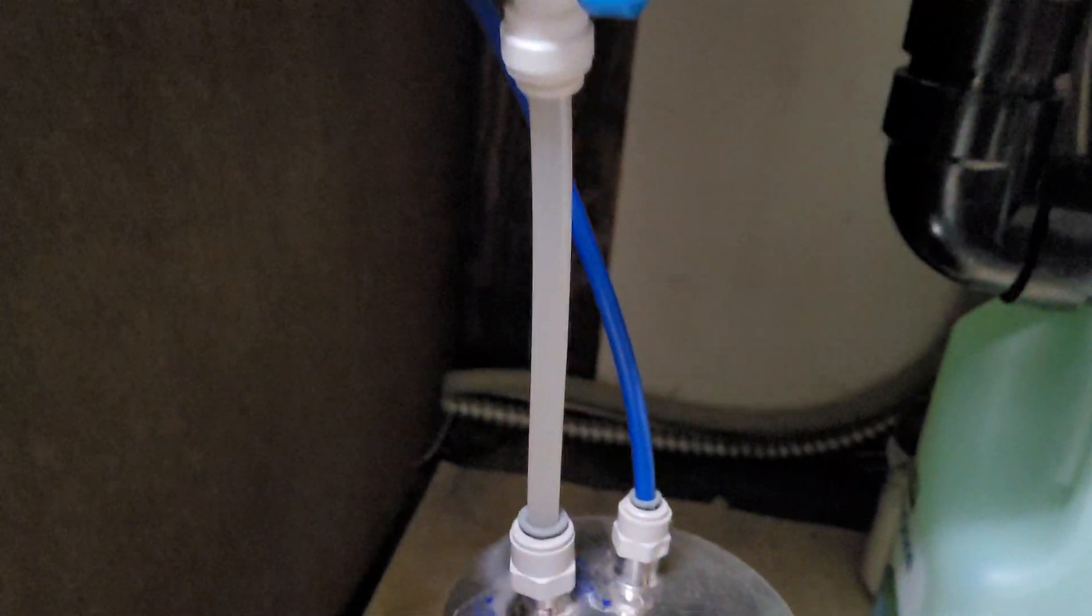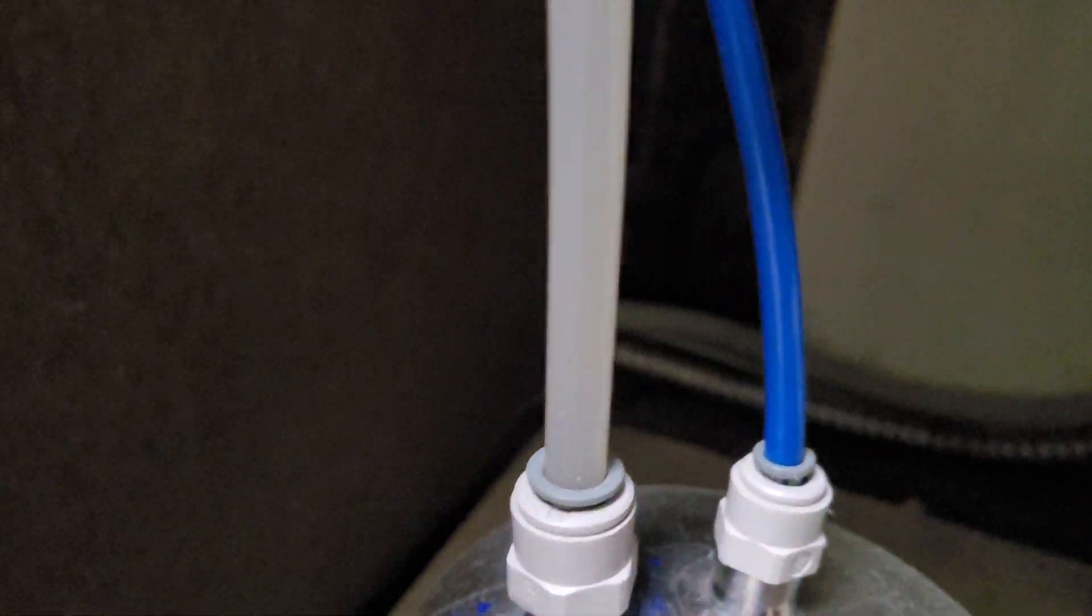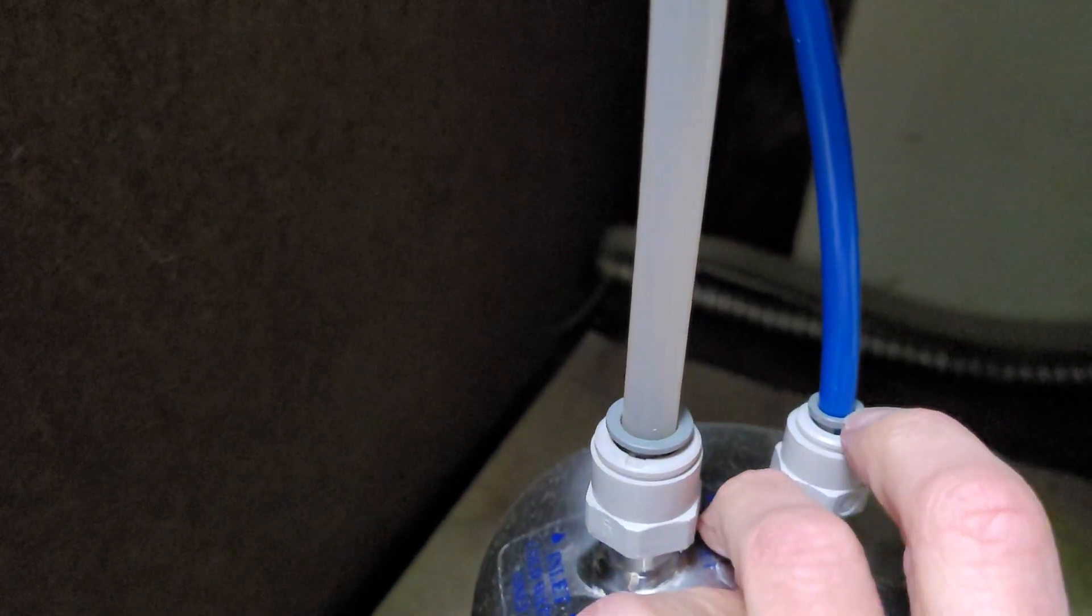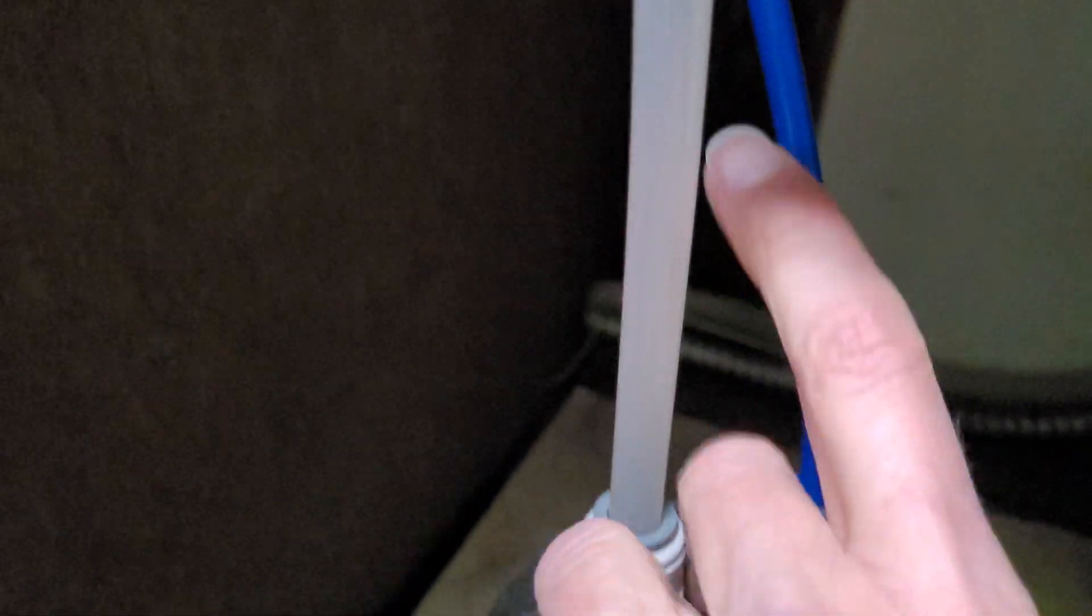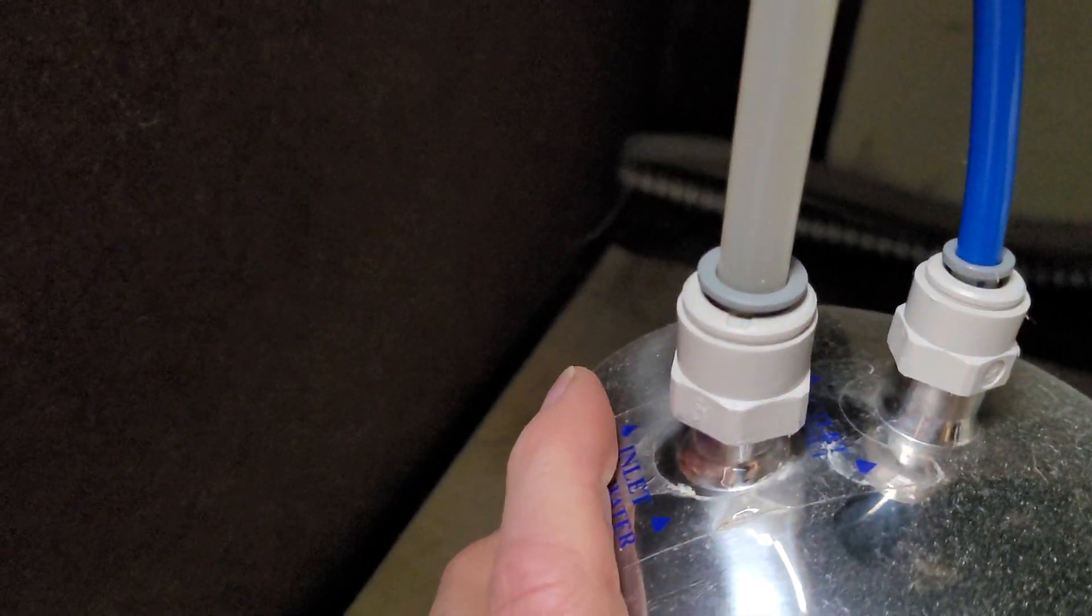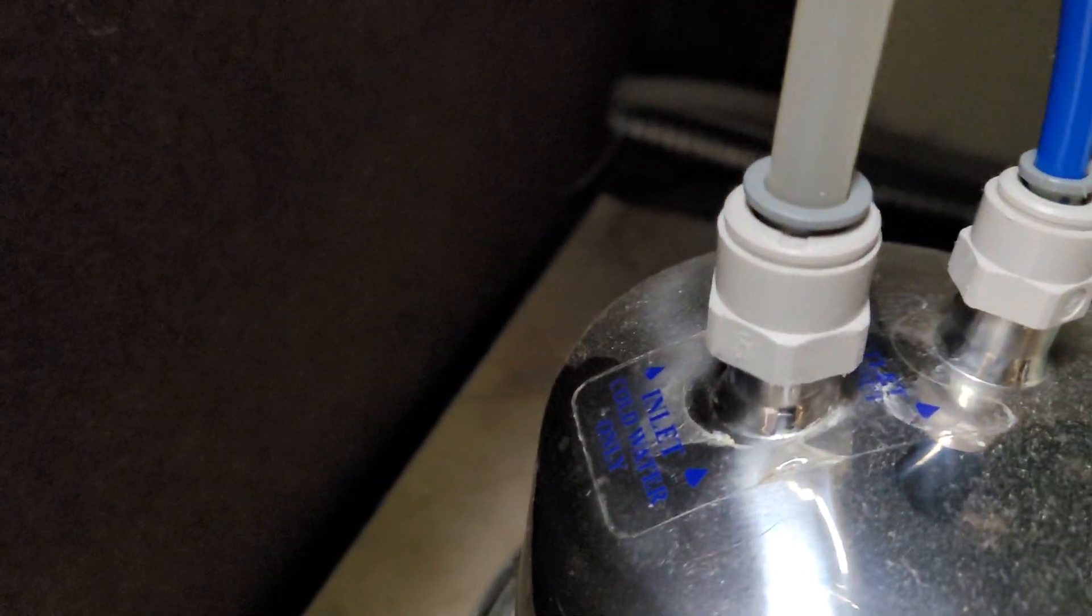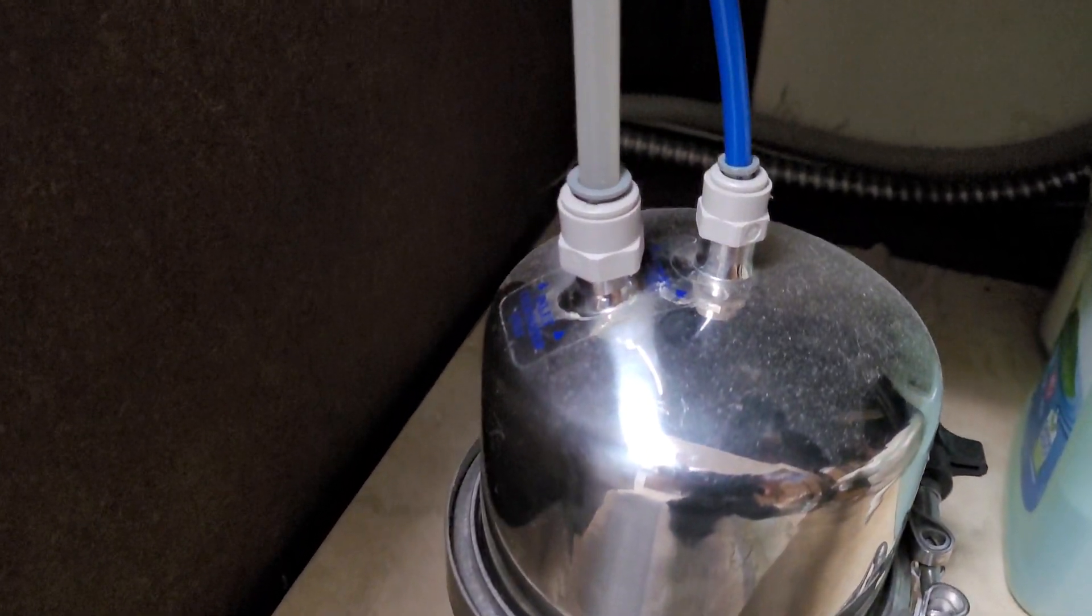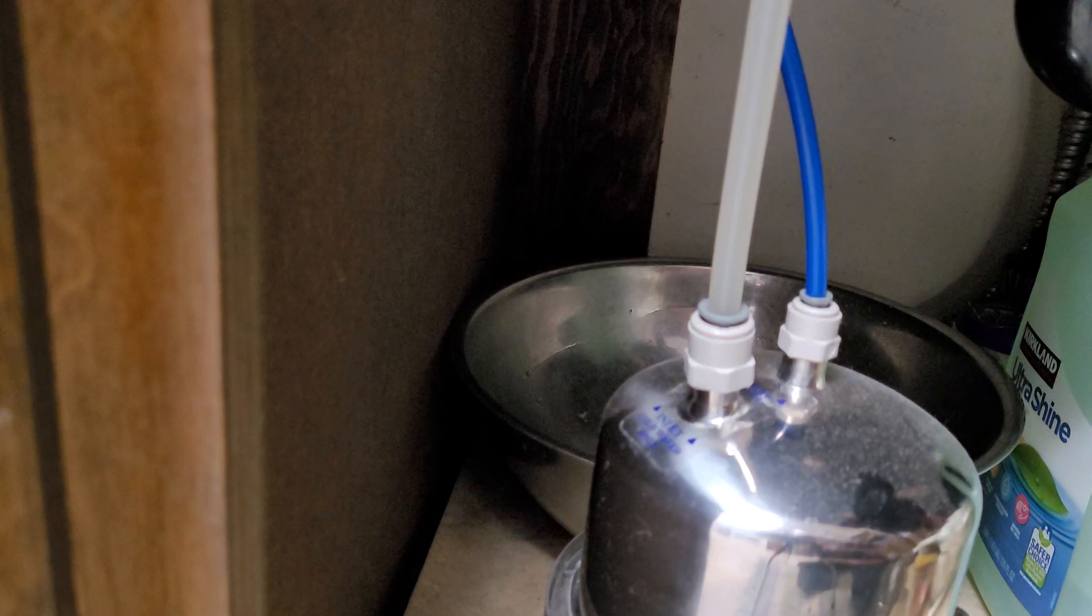So now let's get this disconnected. We're going to disconnect the tubing to the filter faucet and we are going to also disconnect this feeder line here, which is bringing the water into the filter from the cold water source.